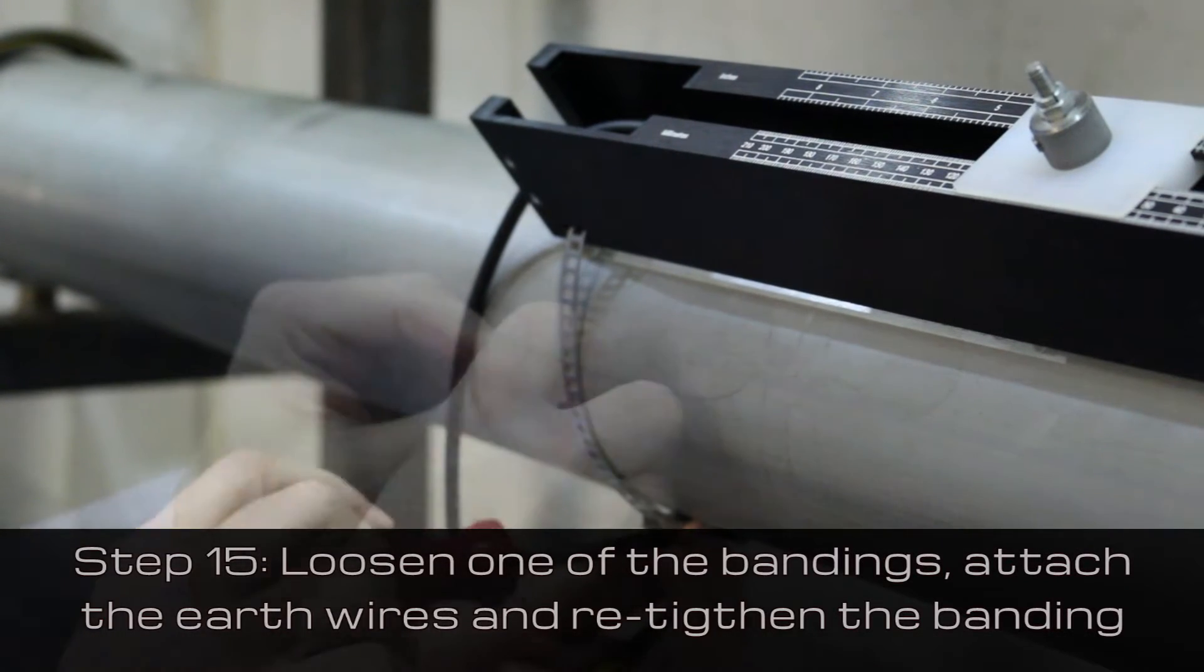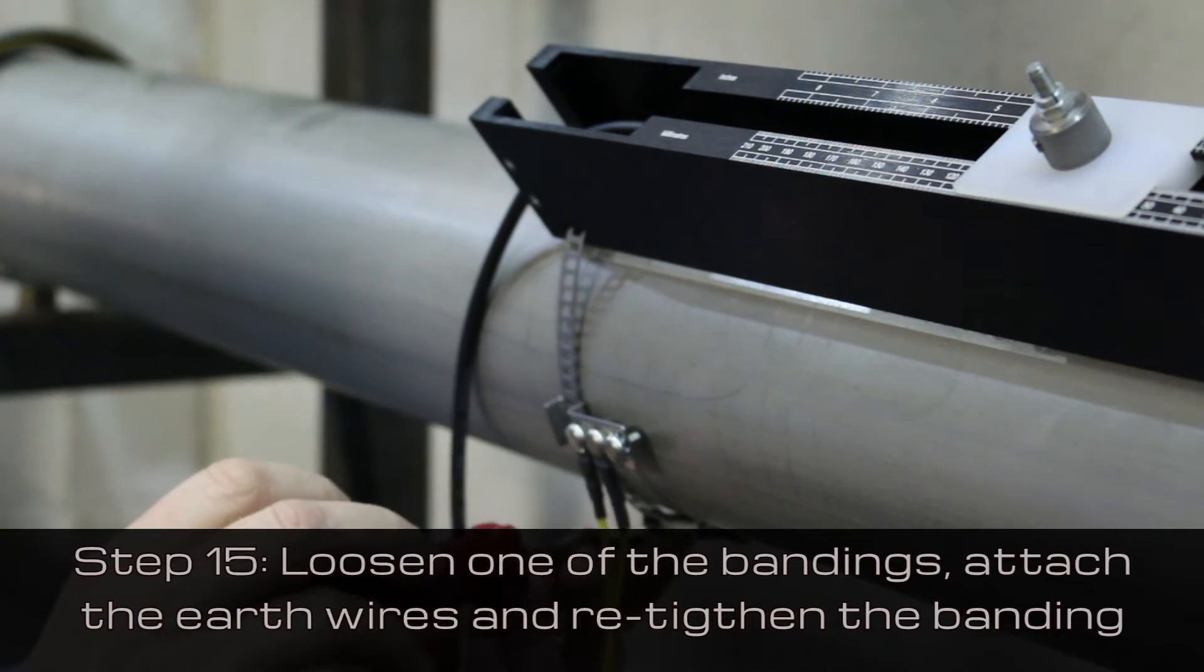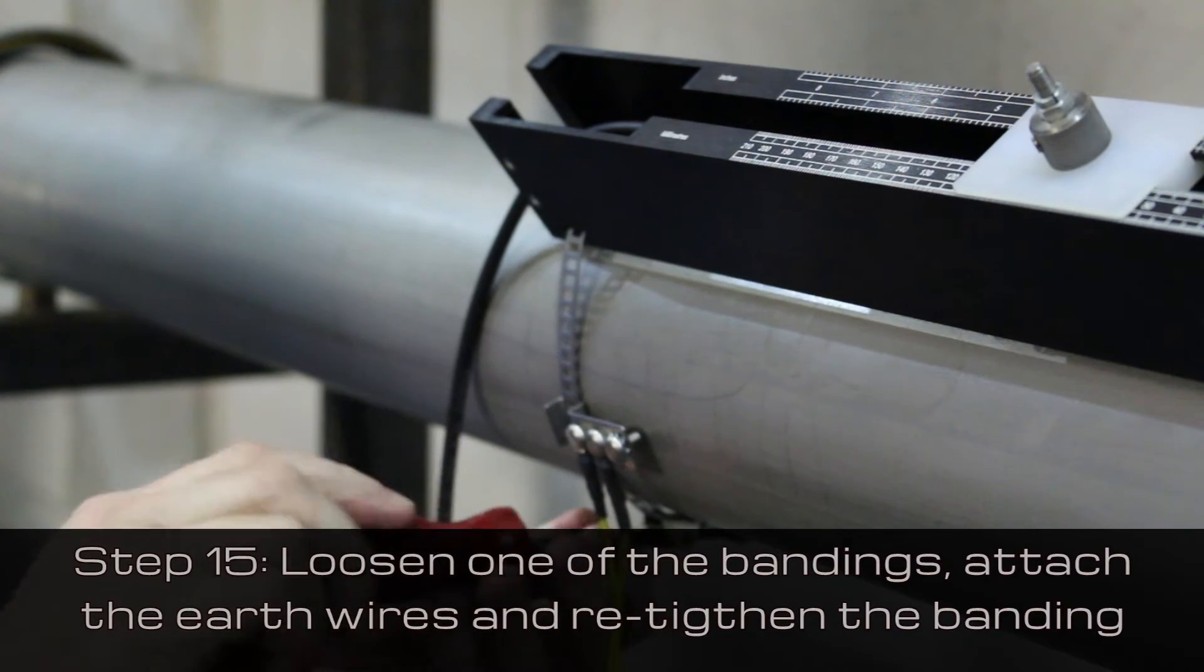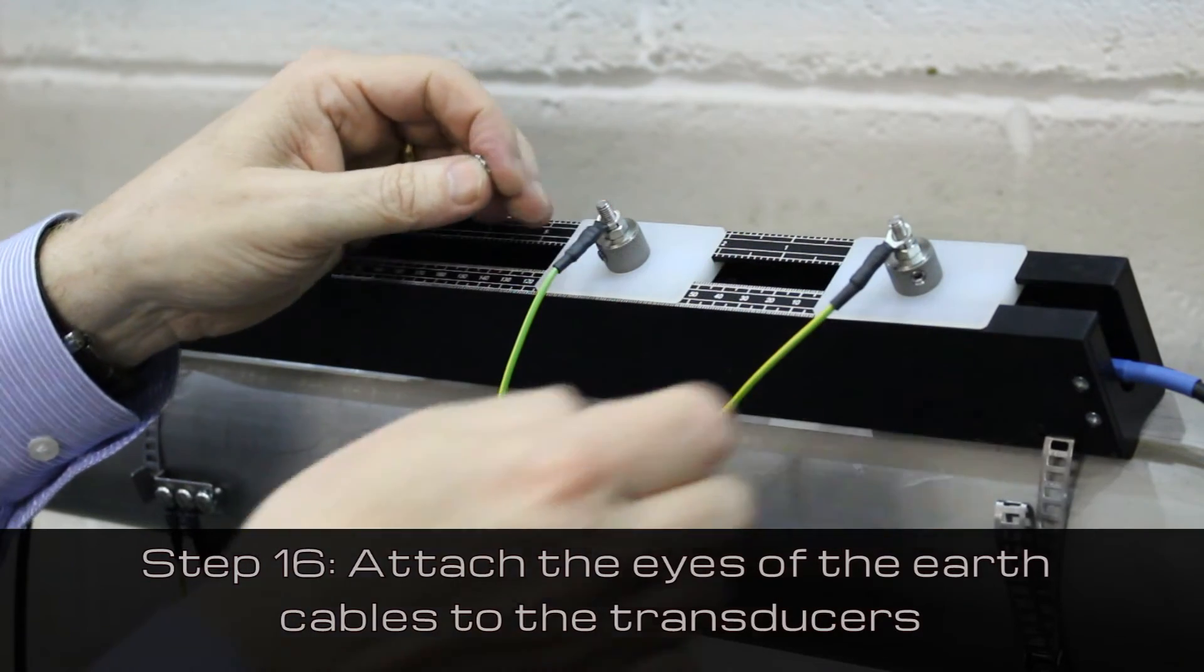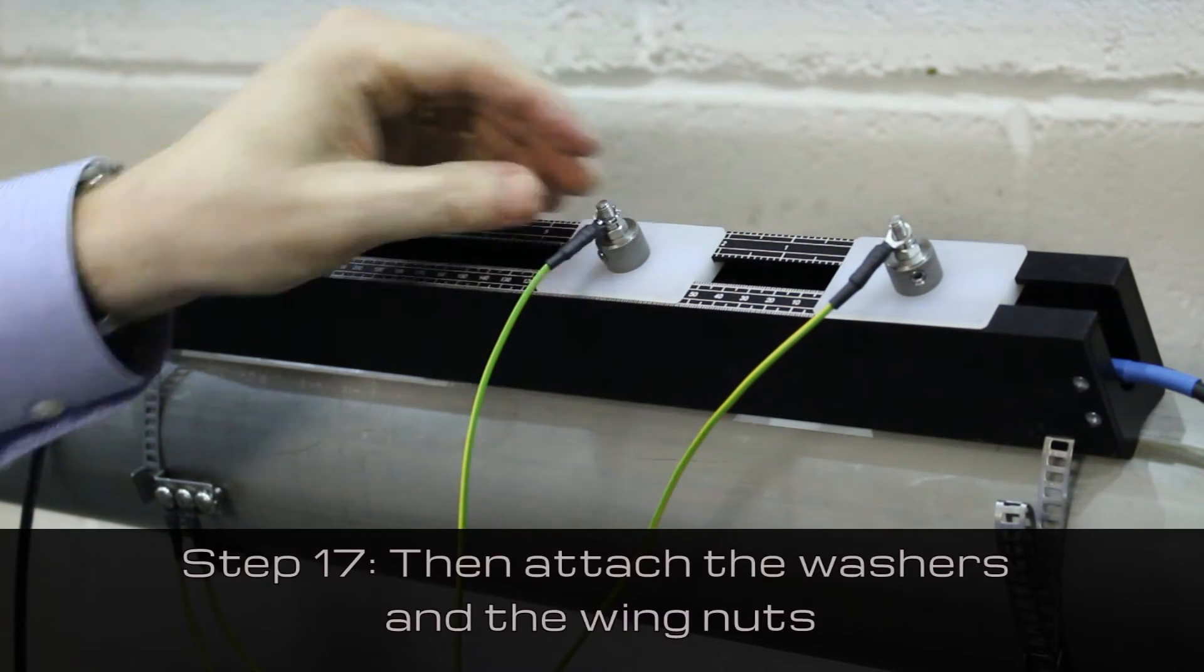Loosen one of the bandings, attach the earth wires, and retighten the banding. Attach the eyes of the earth cables to the transducers followed by the washers and the wing nuts.